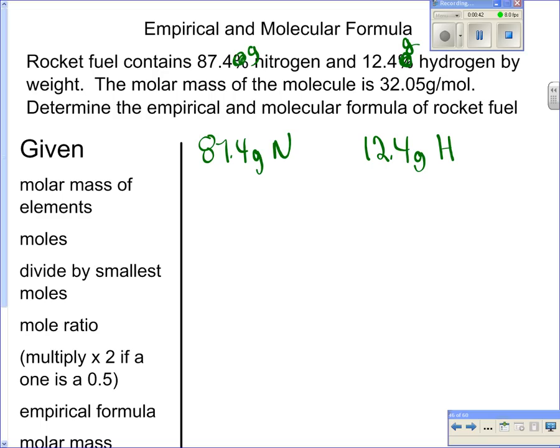So the next step is to look at the molar mass of those elements. I know nitrogen is 14, again not diatomic, and hydrogen is 1.